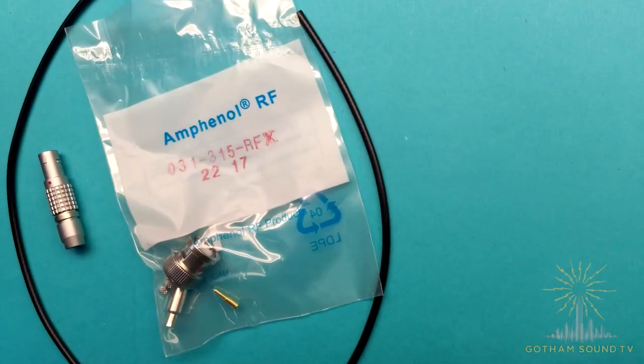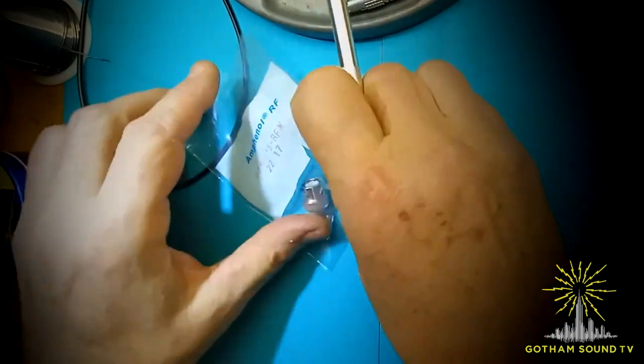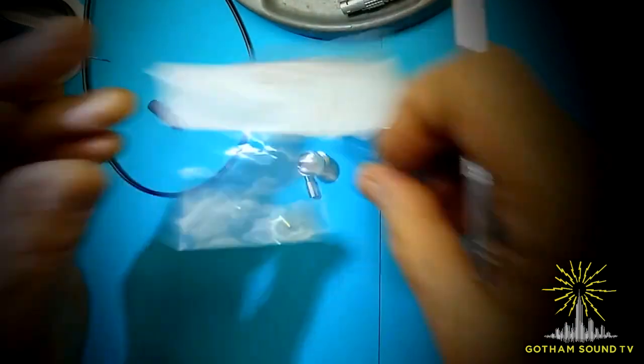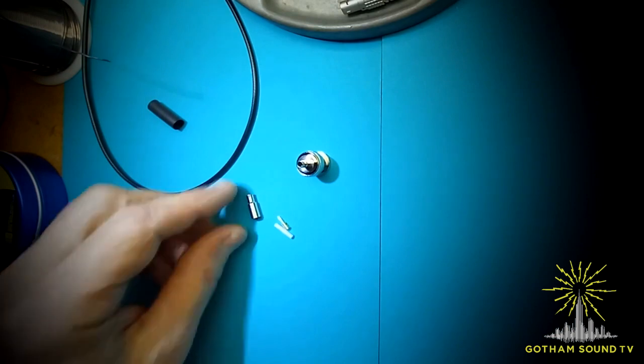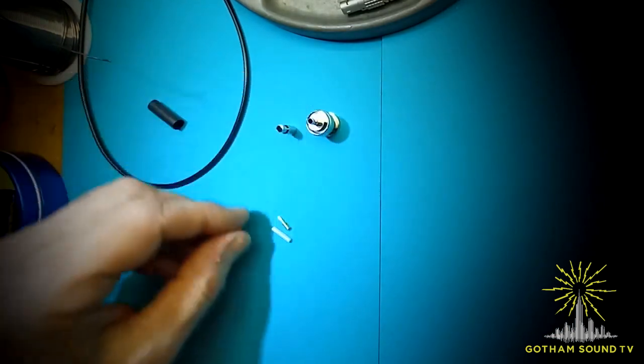All necessary parts: RG174 coaxial cable, 50 ohm BNC crimping connector, and Lemo 5 pin connector. Get everything from a bag and prepare the cable end for BNC connector.